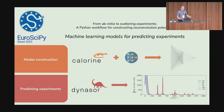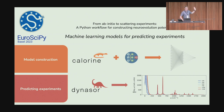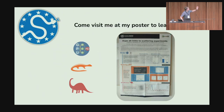The first package is called Calorine, which helps with constructing the machine learning models. These models are then used within a simulation, and the output from this simulation can be fed into the other package, Dinosaur, which actually predicts the experimental results. If this sounds interesting, please come to my poster number three. This is how it looks, so you don't forget. Thank you very much.